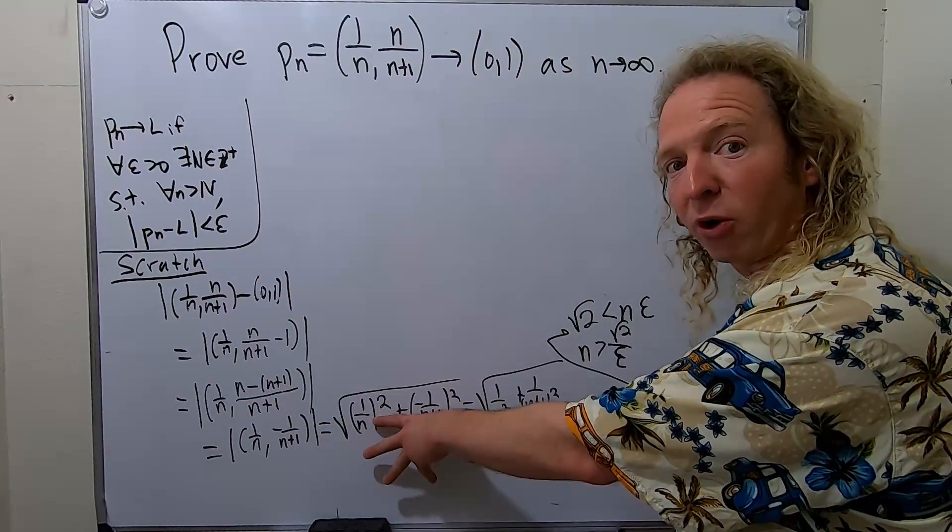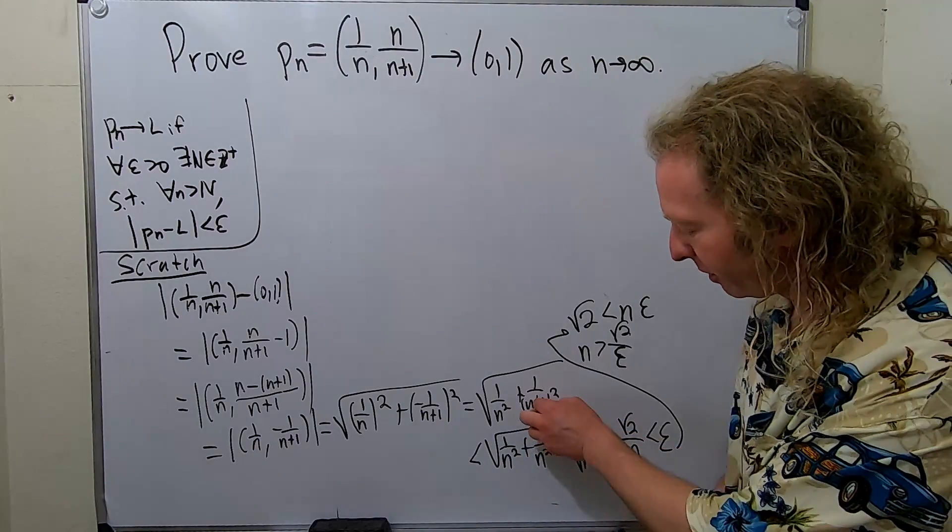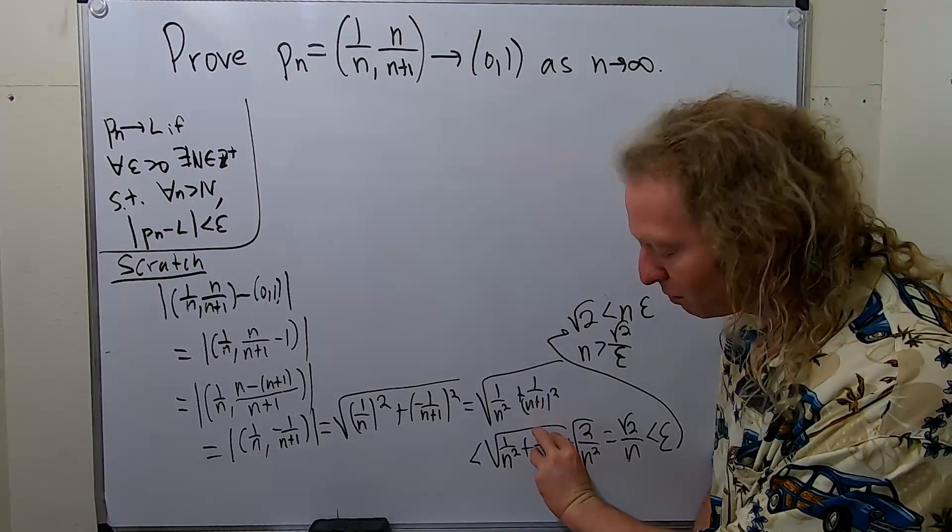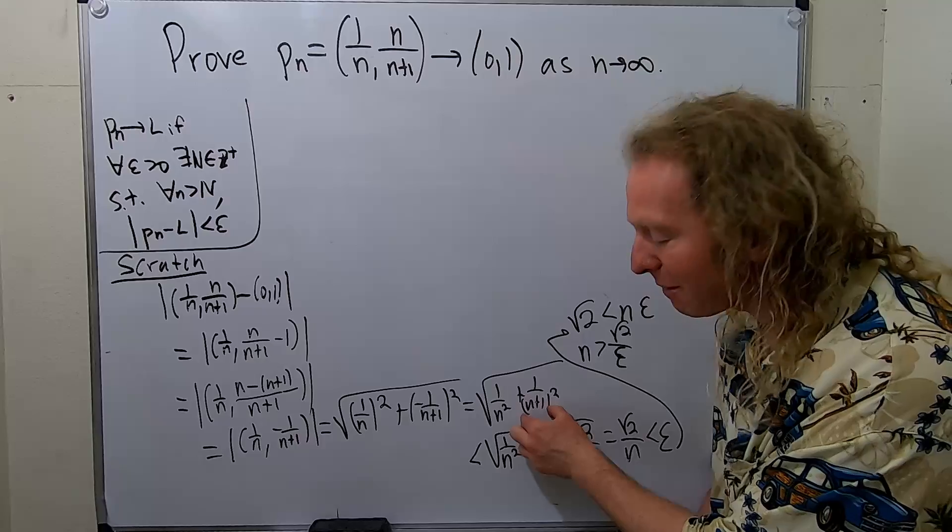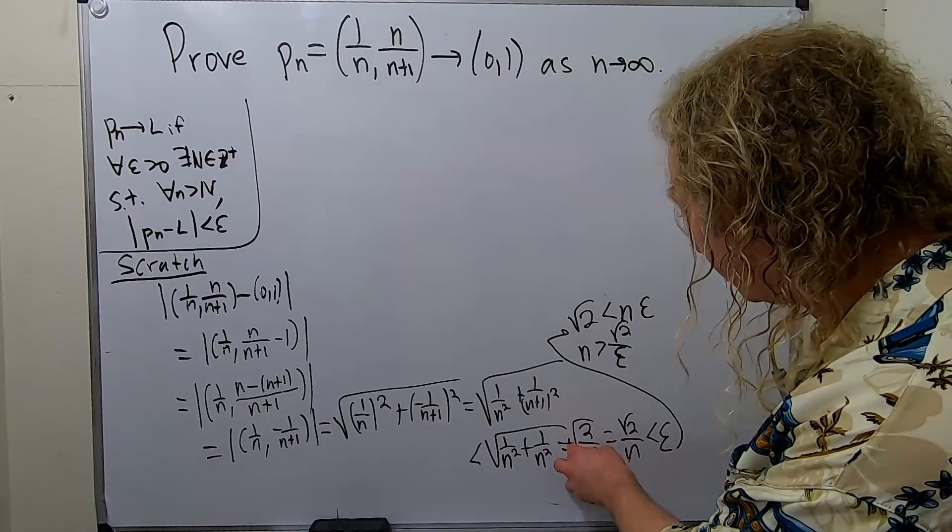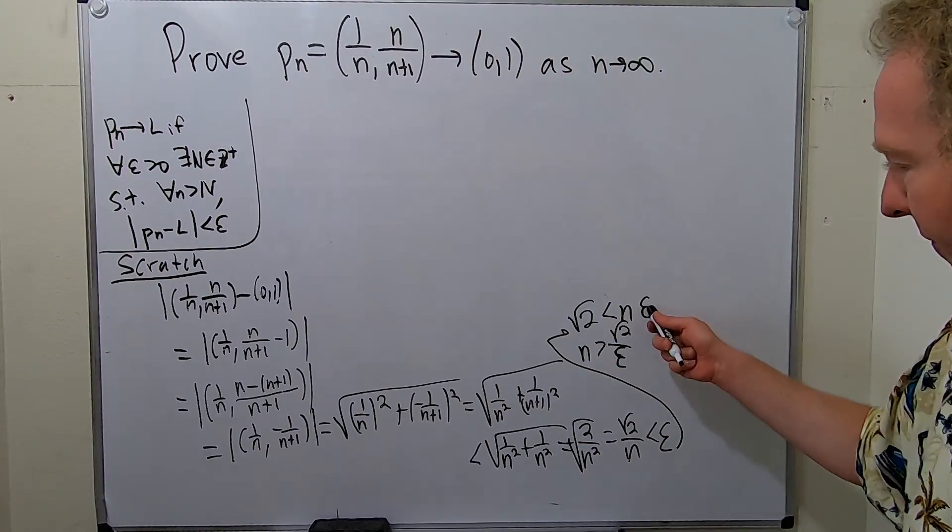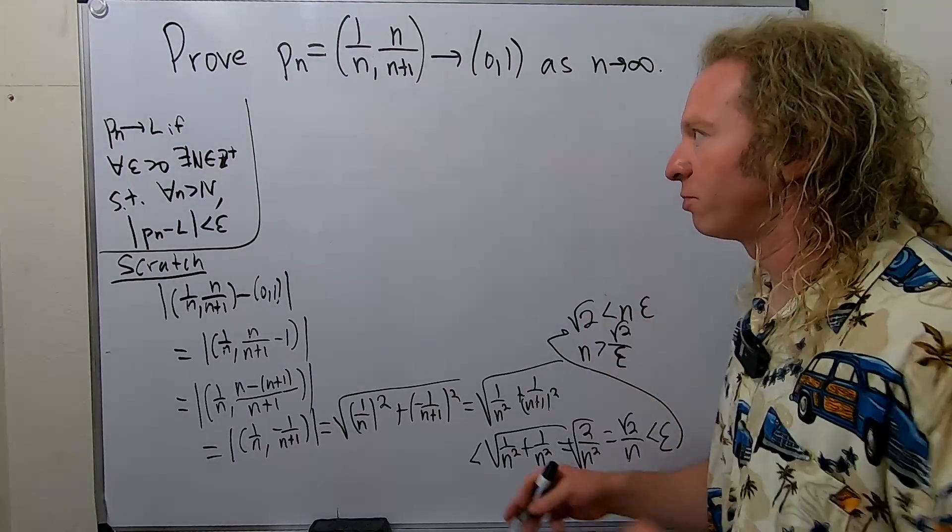And then we simplified it. This is just the definition of the norm. The negative goes away. To go from here to here I dropped the 1 because this fraction is smaller than this one because the denominator here is bigger. I did that so I could add them up. Took the square root. Wanted to be less than epsilon. Multiply by n. Divided by epsilon. We are there. So let's do the proof.